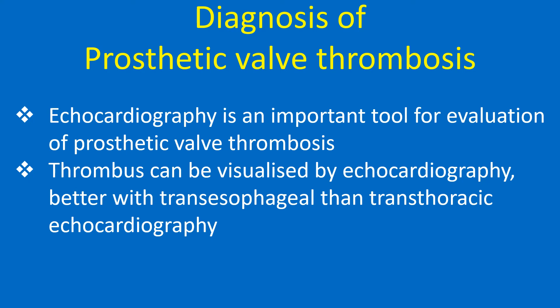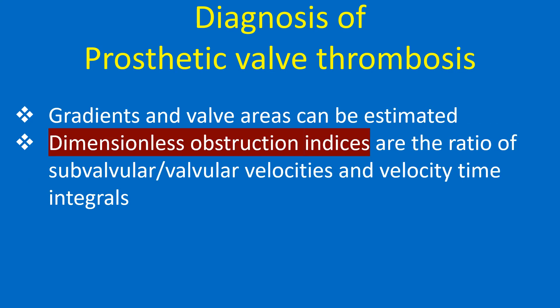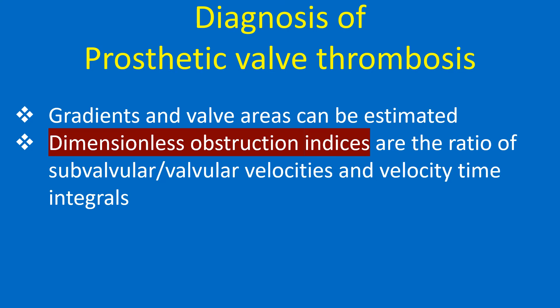Echocardiography is an important tool for evaluation of prosthetic valve thrombosis. Thrombus can be visualized better with transesophageal than transthoracic echocardiography. Gradients and valve areas can be estimated, and dimensionless obstruction indices — the ratio of subvalvular to supravalvular velocities and velocity-time integrals — can also be calculated.